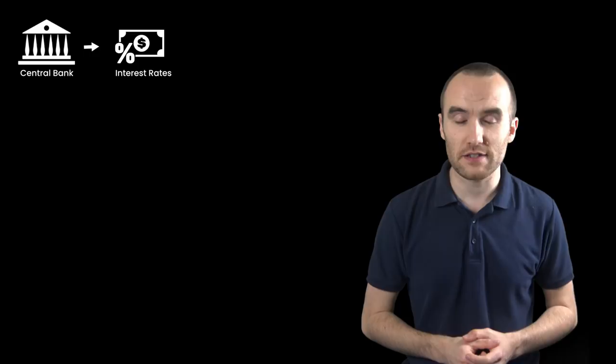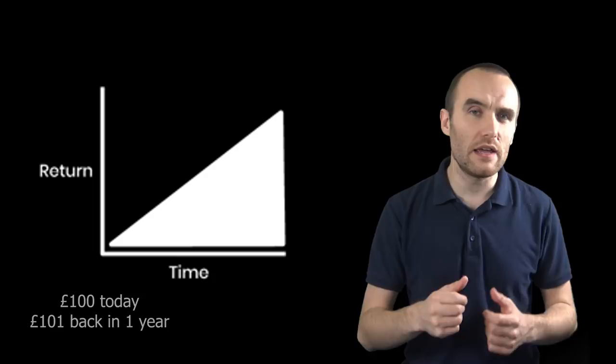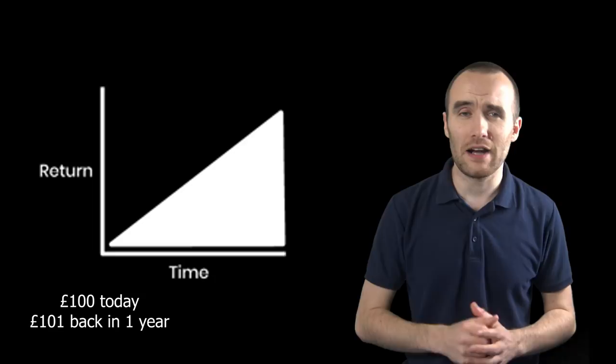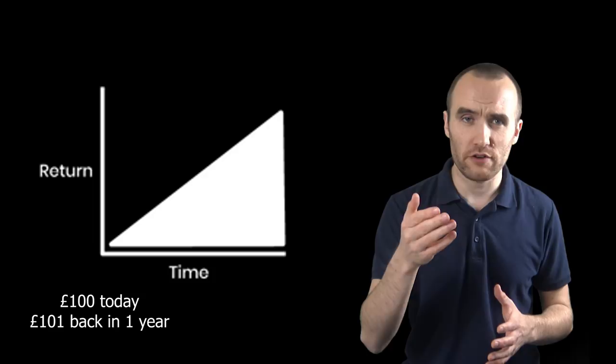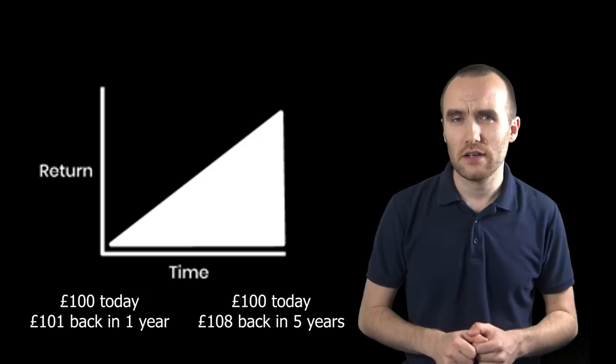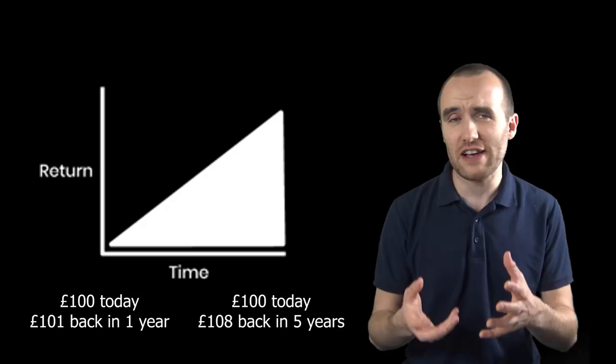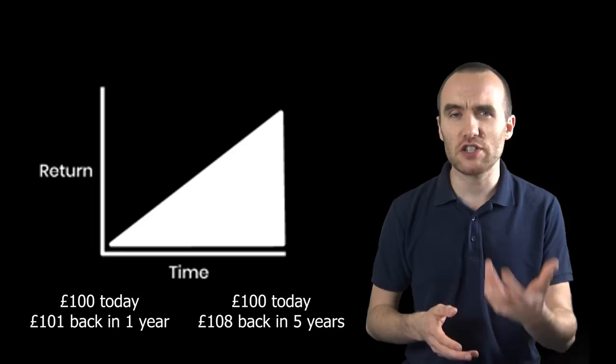First, they set interest rates. Interest rates are simple to understand. Here we have a triangle — the bottom line is time, and the rising line is the return. So imagine if I ran a business and I said to you: give me £100 now, and I'll give you £101 back this time next year — that would be a one-year rate at £1 return. Or loan me that £100 for 5 years and I'll give you £8 back instead, so that would be a 5-year rate at £8. The reason for this is because if you lend me money for longer, I have more chance of investing that money into my business and making a higher rate of return. This higher rate of return is then passed on to you as a thank you, so it's in your incentive to lend for longer.